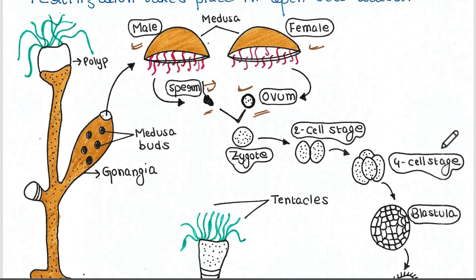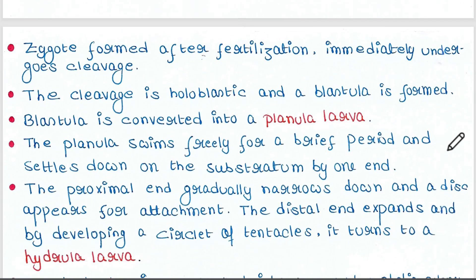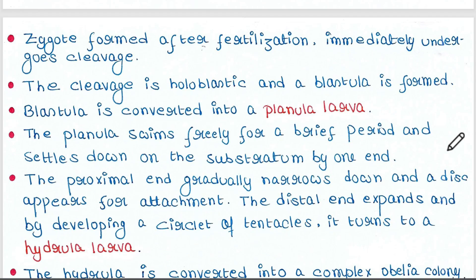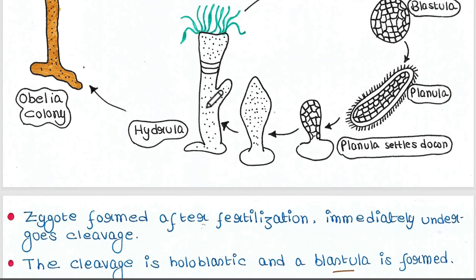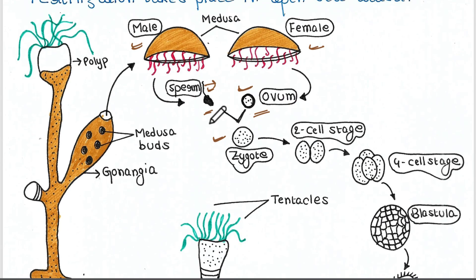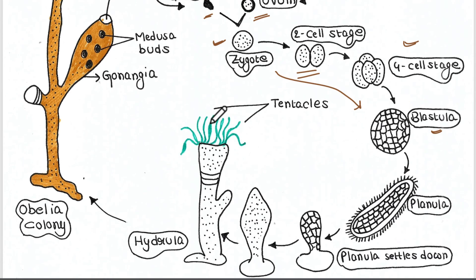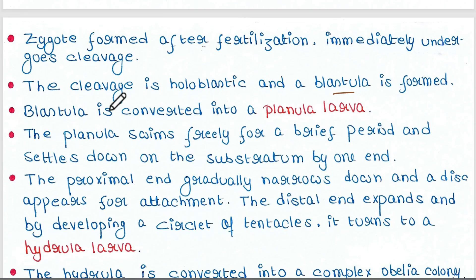Fertilization takes place in open seawater — that is external fertilization — and in the seawater, a zygote is formed. The zygote undergoes cleavage immediately after fertilization. The cleavage is holoblastic, and the blastula is formed: from the zygote, two-cell stage, then four-cell stage, and then the blastula. This is holoblastic cleavage. The blastula is then converted into a planula larva.